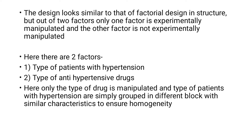Here we have two factors. Factor 1 is the types of patients with hypertension: patients with primary hypertension only, patients with diabetes and hypertension, and patients with renal disease and hypertension. Factor 2 is the various types of antihypertensive drugs. Only one factor is manipulated — the types of patients are constant, while the types of drugs given to patients are manipulated.